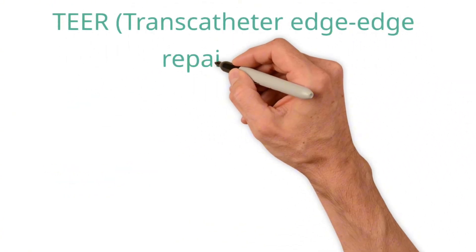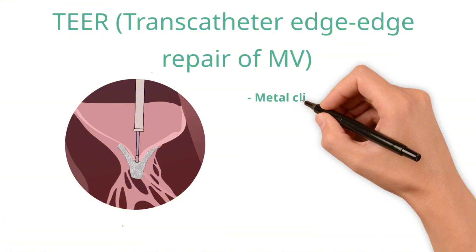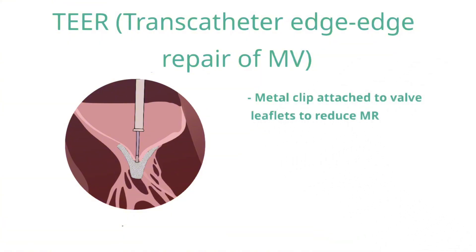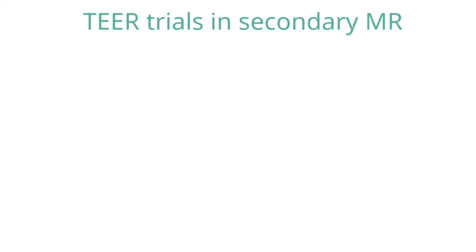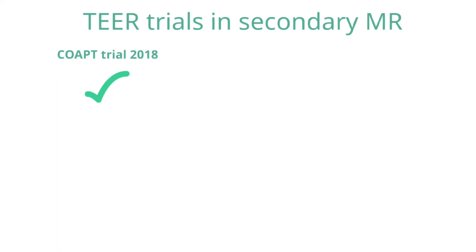TEER has emerged as a minimally invasive treatment option for this cohort. TEER is performed percutaneously under x-ray and transesophageal echo guidance in the catheter laboratory by a cardiologist specialising in structural intervention. The idea is to attach a metallic clip onto the free ends of the anterior and posterior leaflet, so as to create a double orifice. A reduction in mitral regurgitation can be measured real-time using transesophageal echo during the procedure. Two pivotal trials investigated the use of TEER with guideline-directed medical therapy, compared to medical therapy alone, for patients with functional mitral regurgitation. The COAPT trial showed a significant reduction in both mortality and heart failure hospitalisation at two years.